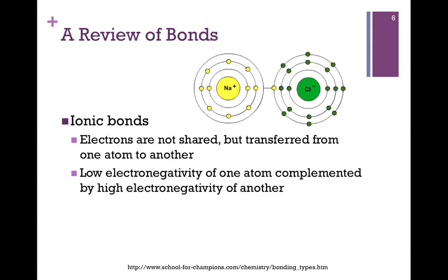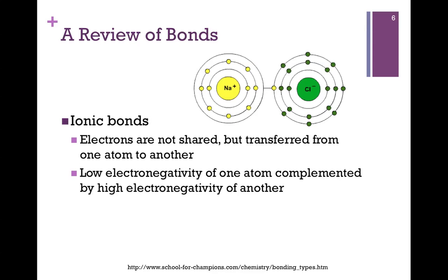Our next strongest type of bond is an ionic bond. In this case, the electrons are not shared, but they're actually transferred from one atom to another. A low electronegative atom — the metal ions on the left of our periodic table — give up electrons, and those on the right of our periodic table, the nonmetals, are highly electronegative and tend to collect electrons. We're looking at sodium and chlorine. Sodium only has one electron in its outer shell, so it's easier to give up one than to collect seven, and it becomes a sodium +1 ion. Chlorine has seven outer shell electrons, so it's easier to accept one than to give up seven, and it becomes a chloride −1 ion. However, even though the electron may be said to be transferred, there is some degree of sharing going on between the two.